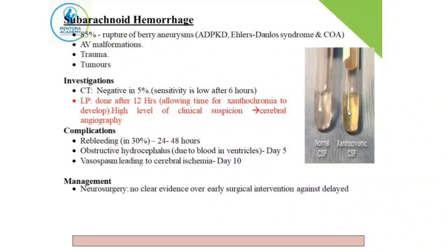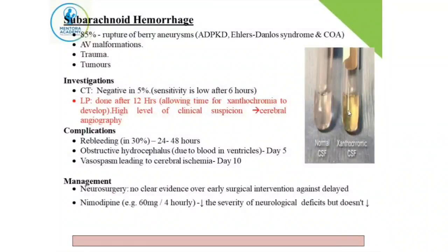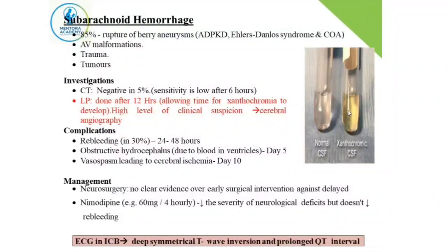Management of subarachnoid hemorrhage requires urgent neurosurgical referral. The patient will have high blood pressure, which is controlled with calcium channel blockers such as nimodipine, which has been found to decrease the severity of neurological deficit. Neurosurgical options include clipping or coiling of the aneurysm based on its morphology — either a neurosurgical or interventional radiological approach, decided by the treating team.